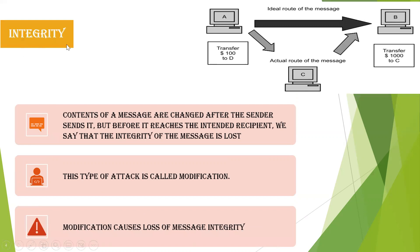Next is integrity. Just as we need confidentiality and authentication to maintain the secrecy of a message, we also need to maintain the integrity of the message. Integrity means the content of the message must not be changed after sending. When A sends a message to B, whatever A sends should arrive unchanged — it should not be altered before reaching the recipient.